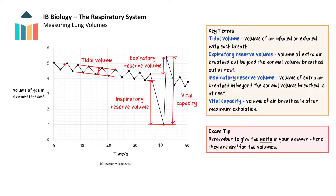One inhalation followed by one exhalation constitutes one breath. The part of the trace showing breathing at rest illustrates the tidal volume — the volume of air inhaled or exhaled in one breath at rest. If after a normal inhalation at rest you breathe in as much as possible, that additional volume is the inspiratory reserve volume. If after a normal exhalation at rest you breathe out as much as you possibly can, that is the expiratory reserve volume. If you inhale as much as you can and then exhale as much as you can, the volume exhaled is your vital capacity.